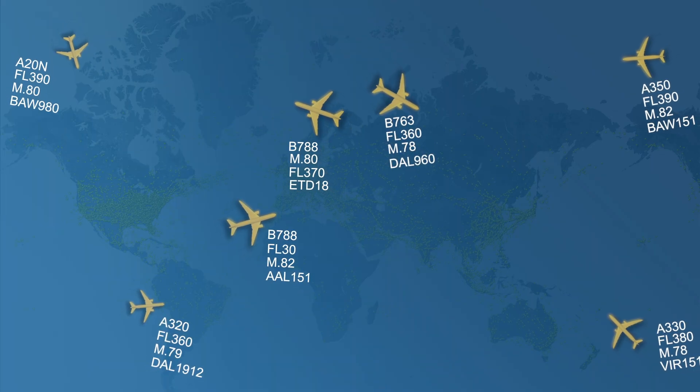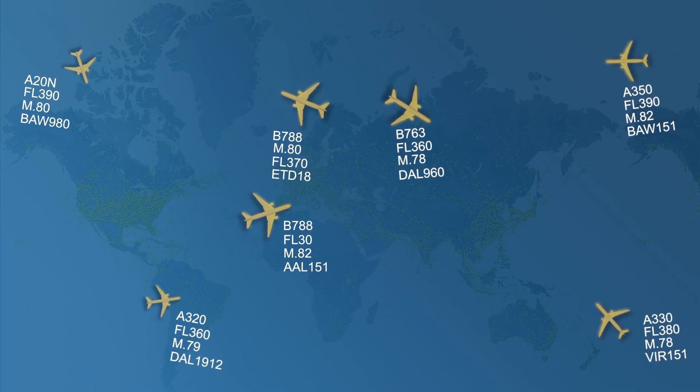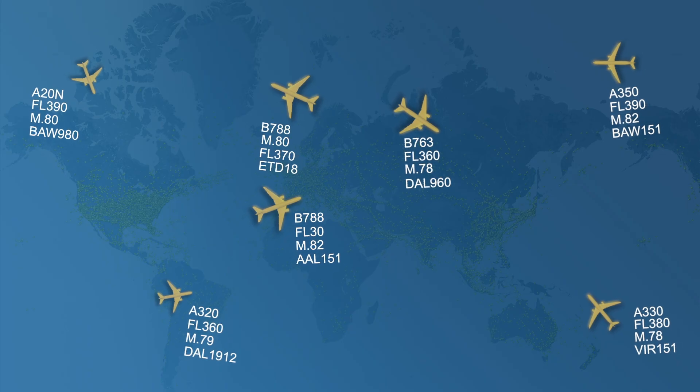The next step is data processing. The ADS-B receiver processes this data which can then be displayed on a screen such as a cockpit display or an air traffic control screen.